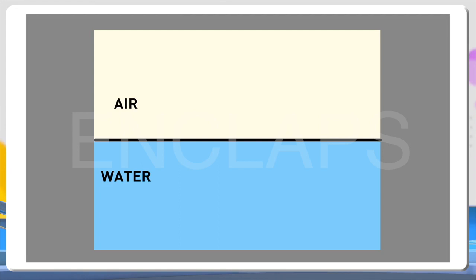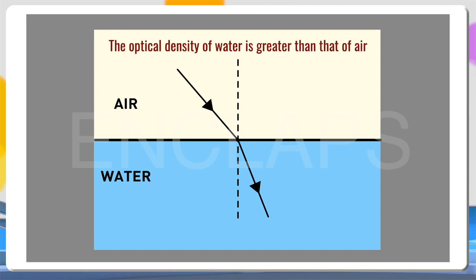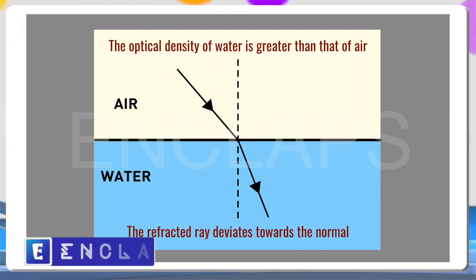Refraction can occur at the interface of any two media having different optical densities. Now let's look at some schematic representations of refraction. This first figure shows an air-water interface where a light ray is coming from air to water. Since the ray comes obliquely, refraction will happen. The optical density of water is greater than that of air, meaning the light ray is entering from lower to higher optical density, so the refracted ray will deviate towards the normal.